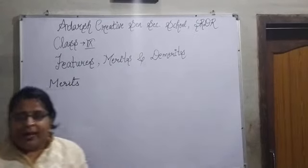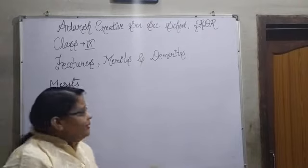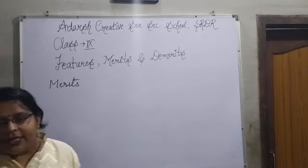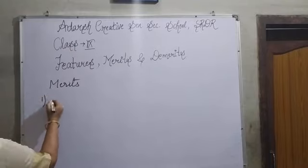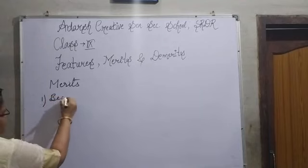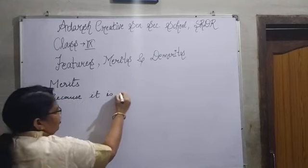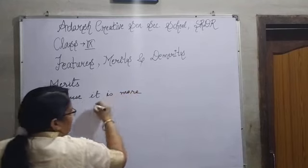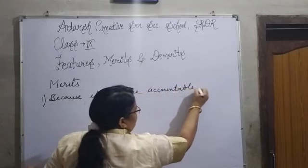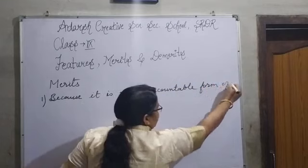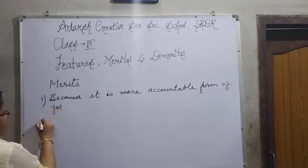Now we will discuss the merits of democracy. First, democracy is a better form of government because it is a more accountable form of government.